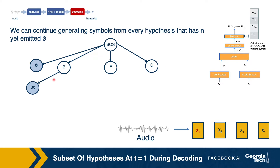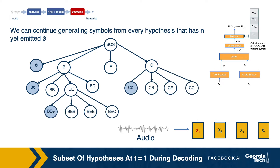You can take one of those extensions and extend it from the current time frame. One extension with blank would go to the next time frame, but other extensions remain in the current time frame. You can generate infinitely many hypotheses at t equals one during decoding. In greedy decoding, we made a local optimal choice to get out of this infinite loop, but we will now look at beam search decoding where we can make better choices.